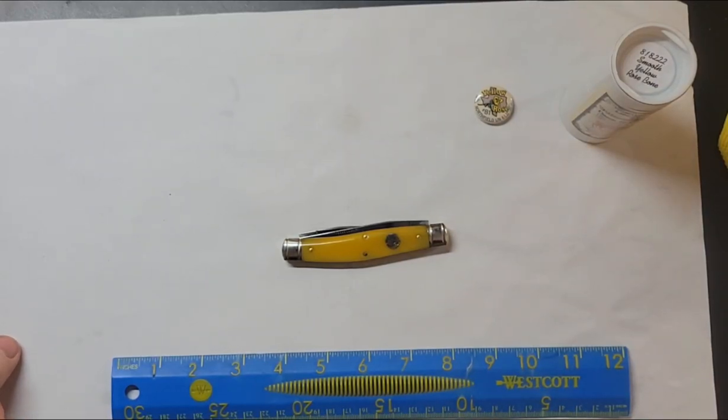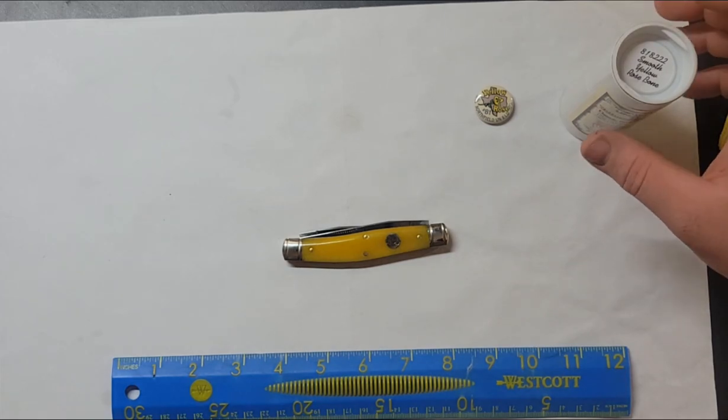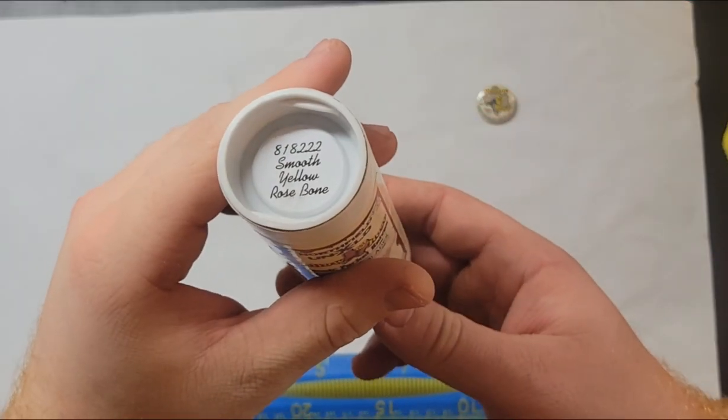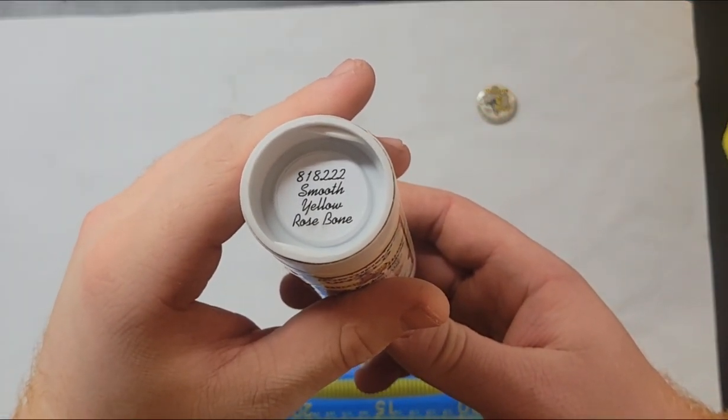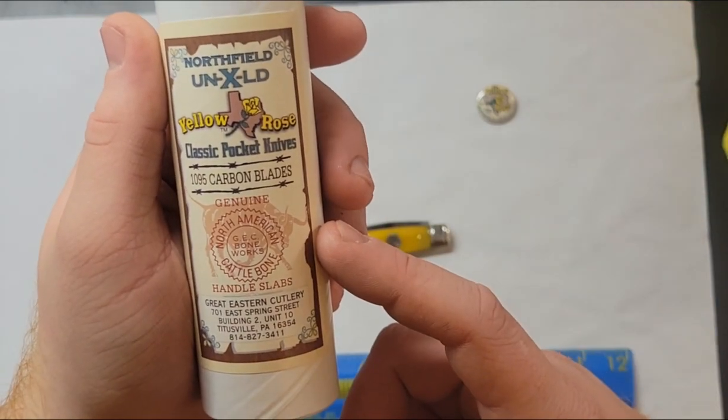Hey y'all, just wanted to show off the new GEC that I got in. This is from their most recent run. This is the 81 pattern and smooth yellow rose bone, also called Texas yellow rose.